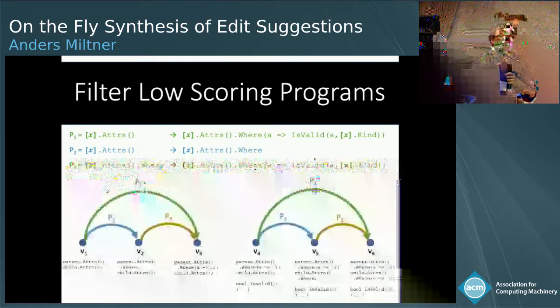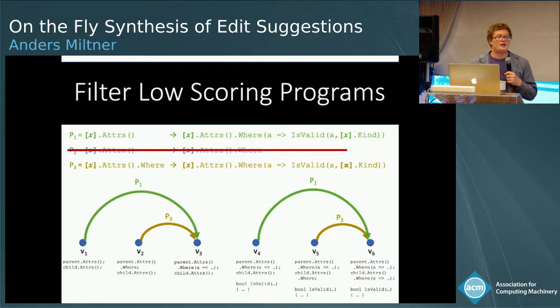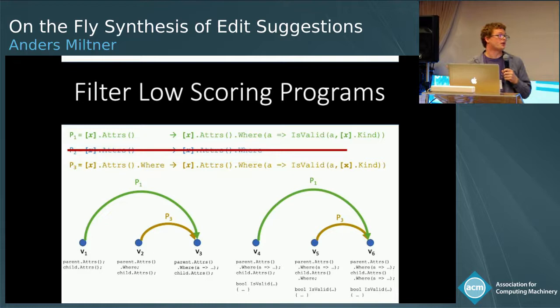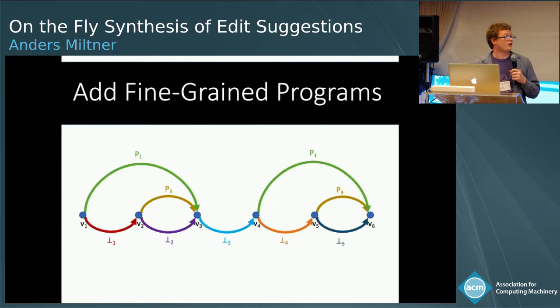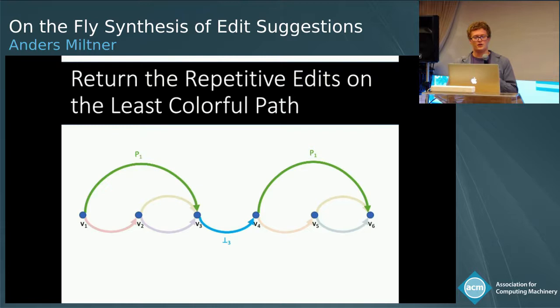We have an additional step where we filter low-scoring programs — this is how we handle the x.y goes to x issue. Bad programs are bad regardless of the context of the graph, so we require the PBE engine to provide a score and filter all programs that don't pass that threshold. After that, we add all fine-grained programs so non-repetitive sequences can be used in the path from initial to final. Then we run an algorithm similar to an approximate minimal subset cover to return the repetitive edits on the least colorful path.